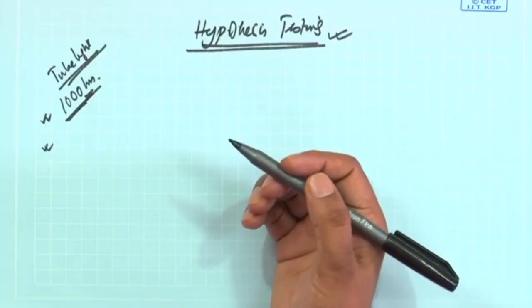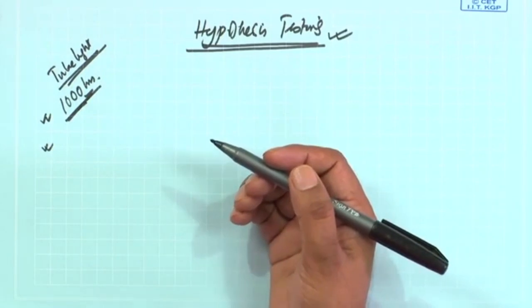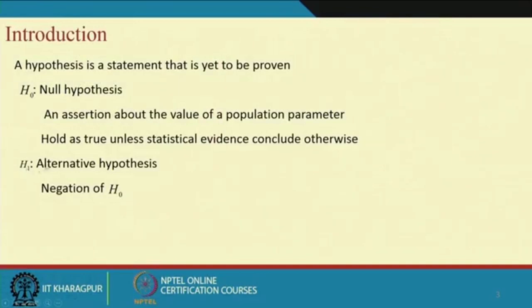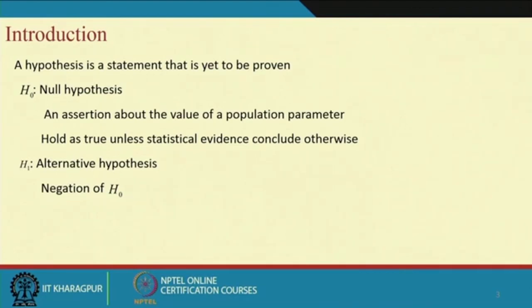The hypothesis you want to accept or fail to reject is known as the null hypothesis. There are two kinds: null hypothesis and alternate hypothesis. The null hypothesis is an assertion about the value of a population parameter held as true unless statistical evidence concludes otherwise. When a person is brought to court, the judge considers them innocent because most people in civilization are innocent. So until proven guilty, they are innocent — that is the null hypothesis. The alternate hypothesis is the negation of the null hypothesis, meaning the null hypothesis is false.